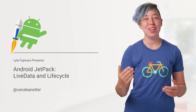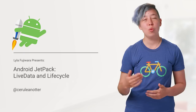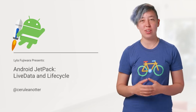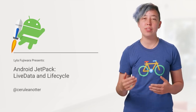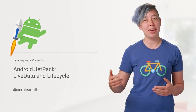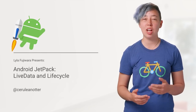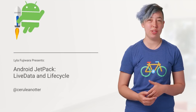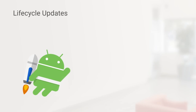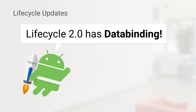At Google I/O 2017, we announced the Lifecycle Library, a set of libraries and guidance for avoiding memory leaks and solving common Android lifecycle challenges. The Lifecycle Library has hit 2.0. It's also now part of Jetpack and includes new integrations with data binding.